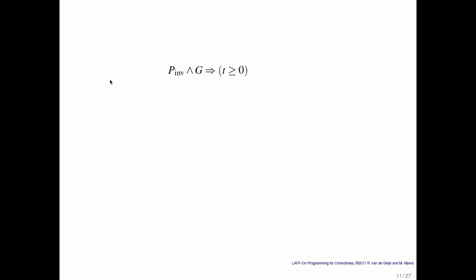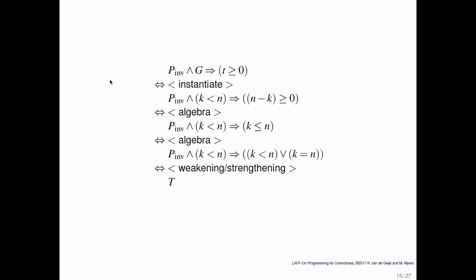So all we now have to do is check two things. We need to check whether the loop invariant and the loop guard implies that this function that we chose is greater than or equal to zero. And we can instantiate what we chose to be that function, n minus k, and we can instantiate g. Usually the loop invariant isn't all that important in this discussion, although sometimes it is. And we ask now the question, is it the case that k less than n implies that n minus k is greater than or equal to zero? And we can then formally prove this. On the right we can apply algebra to come up with k is less than or equal to n on the right of the implication. We can then separate out k equals n. And then we end up with a classic case where a weakening strengthening law applies and leaves us with true.